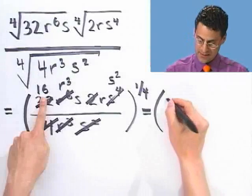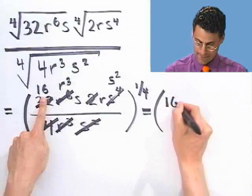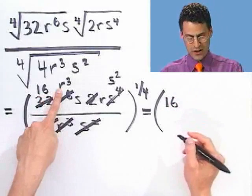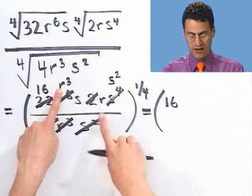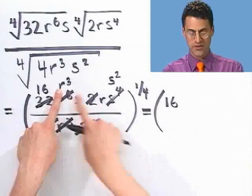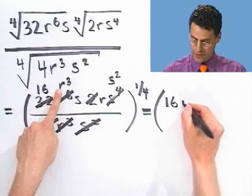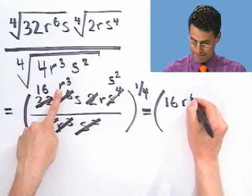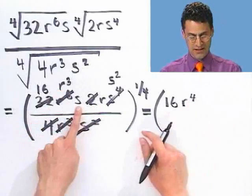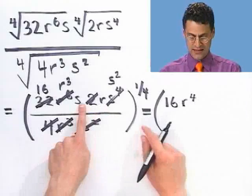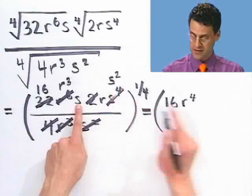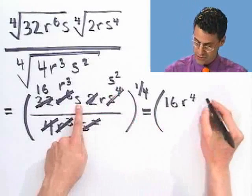So I see 16 on top. I've got r cubed here and another r here — combining them using laws of exponents gives r to the fourth. And I've got s plus s squared, giving s cubed on top.